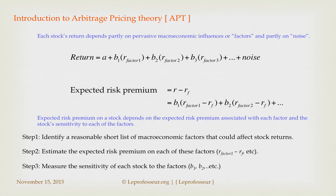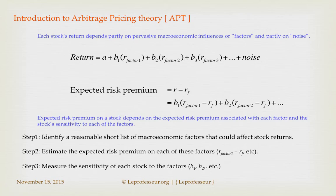To apply APT, step one is to identify a reasonable short list of macroeconomic factors that could affect your stock return. Step two is to estimate the expected risk premium for each of those factors. Step three is to measure the sensitivity of the stock to these factors. How you estimate sensitivities like b1, b2, or risk premiums for different factors is beyond the scope of this lecture, but the idea is to give you an introduction to what APT is.